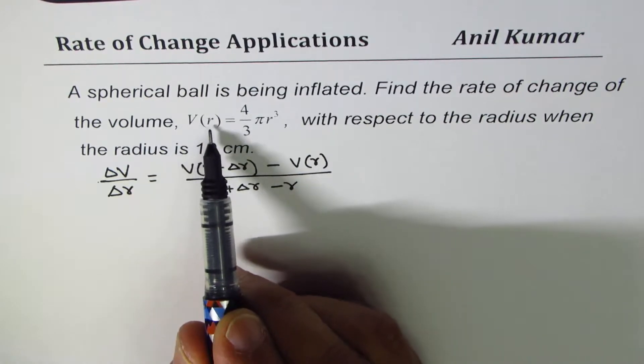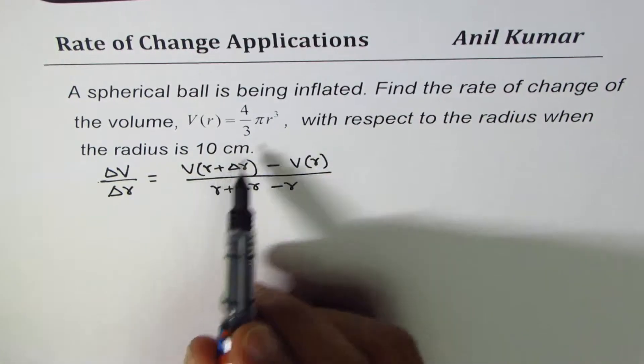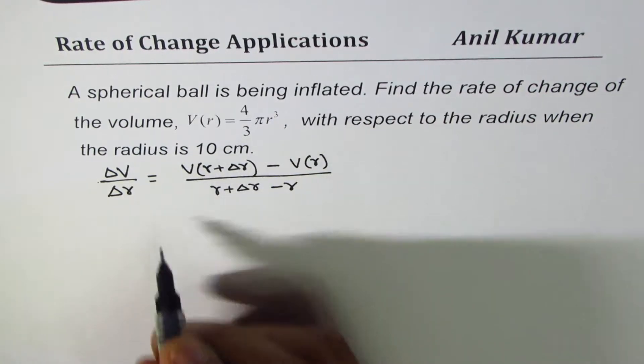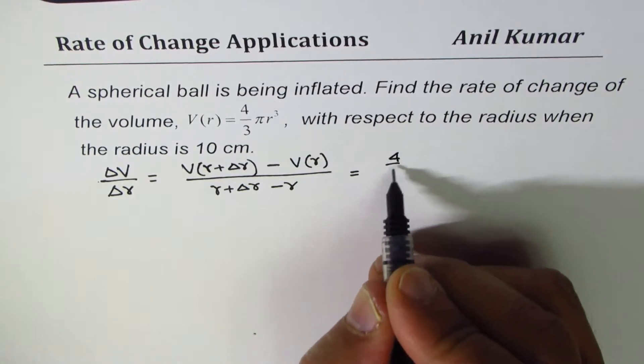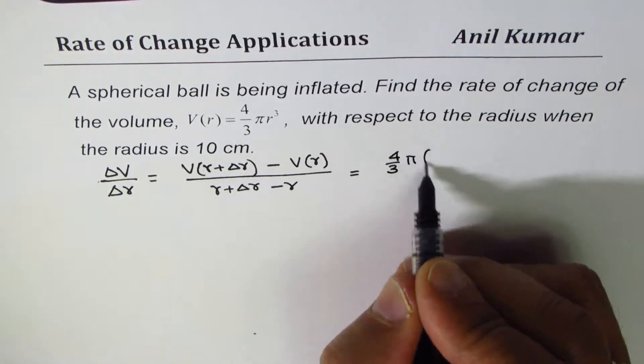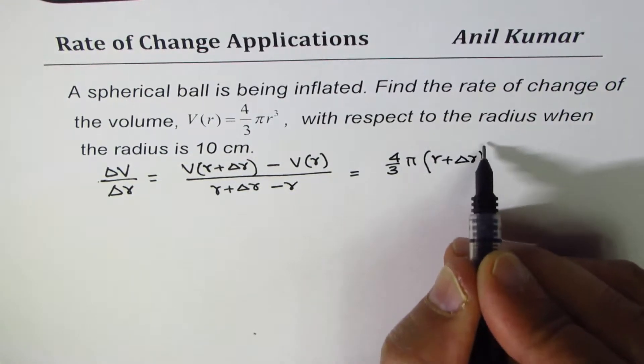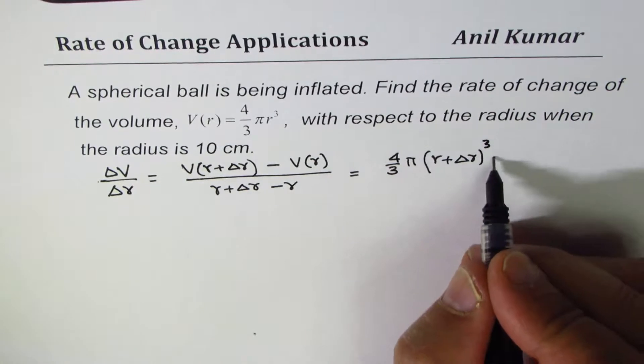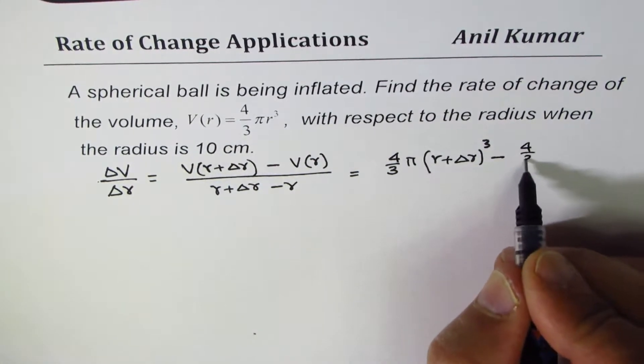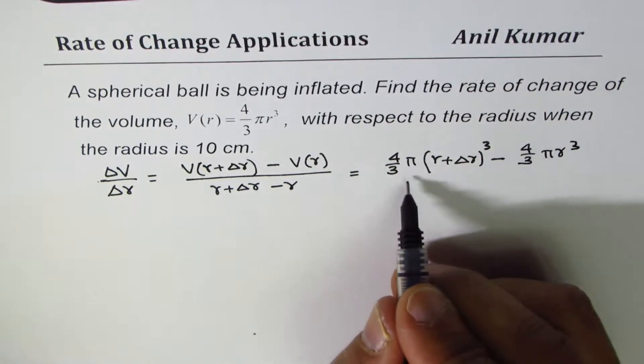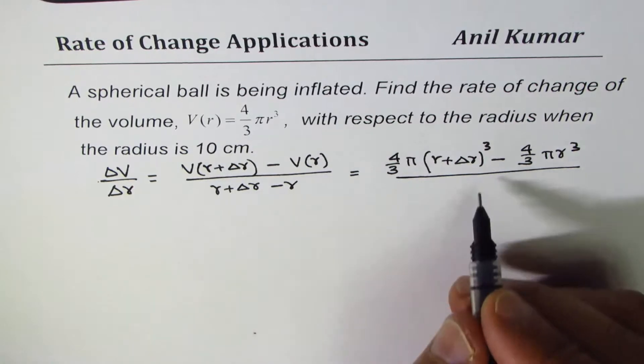Now to get this expression, we have the formula volume with respect to radius is 4/3 πr³, so we'll replace R with R + ΔR. What we get here is 4/3 π(R + ΔR)³ minus V(R) which is 4/3 πR³ divided by R minus R is 0, we are left with ΔR.